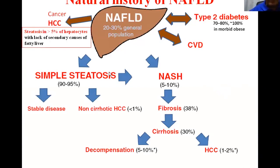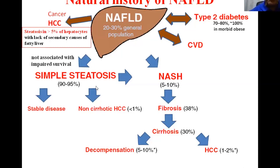The natural history of non-alcoholic fatty liver disease: most cases are simple steatosis, which is not associated with impaired survival and most cases are stable. Very rarely, non-cirrhotic HCC can occur. About 10% of cases are in the form of non-alcoholic steatohepatitis. Of this 10%, one-third will progress to fibrosis, one-third of the fibrotic cases will become cirrhotic, and 10% of cirrhotics will decompensate, with 1 to 2% developing hepatocellular cancer.